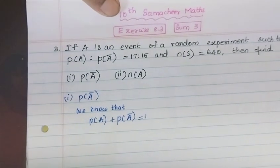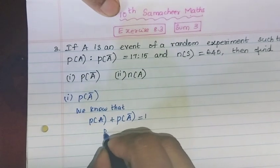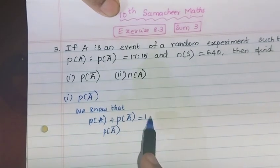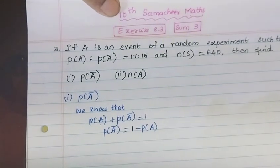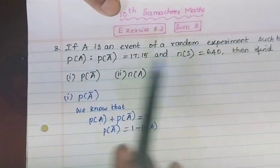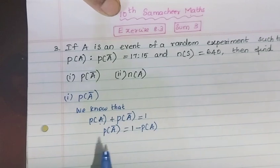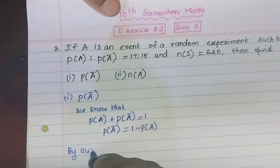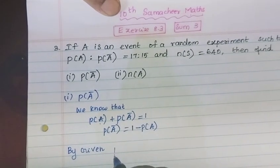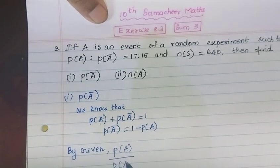Now, P of A complement is equal to 1 minus P of A. Two hints are given: the ratio is 17 to 15, and N of S is 640. The direct question is to find P of A complement. By the given ratio, P of A to P of A complement is equal to 17 by 15.